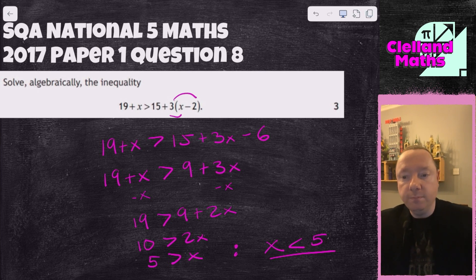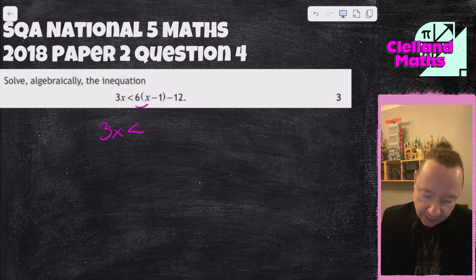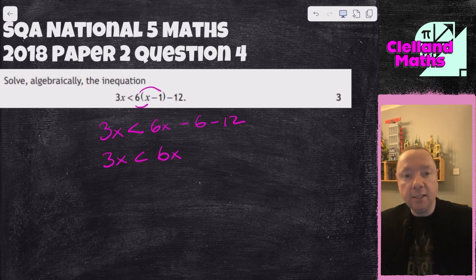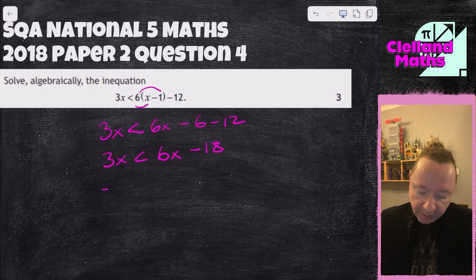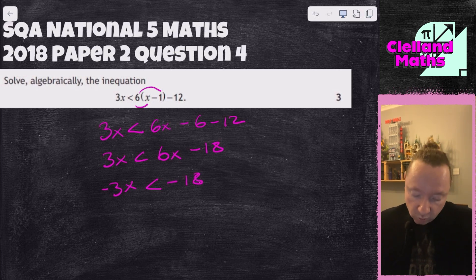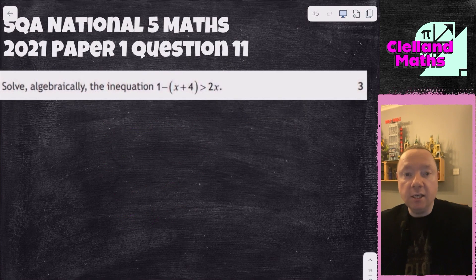SQA National 5 Maths 2018 Paper 2 Question 4: 3x < 6(x - 1) - 12. Expand: 3x < 6x - 6 - 12, so 3x < 6x - 18. Move the 6x: -3x < -18. Dividing by minus 3 — it's a flipper — and a minus divided by a minus is a plus: x > 6. And we're done there.